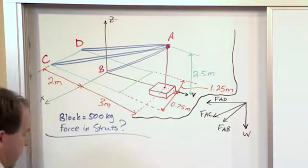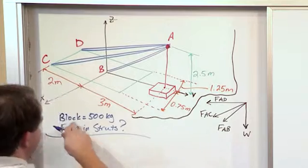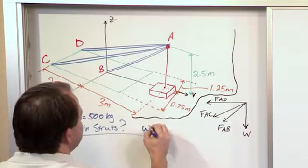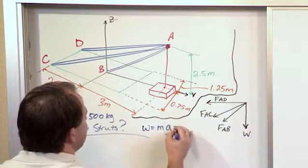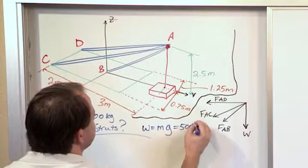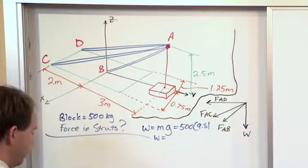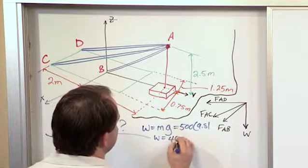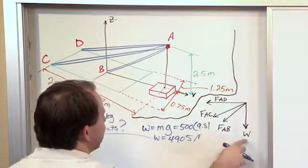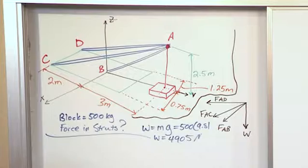Now by the way what is the weight? Well we look at this, we know it's 500 kilograms so the weight is mass times gravity which is 500 times 9.81, so the weight of this object in terms of newtons is 4905 newtons. That's the only real known that we have here.